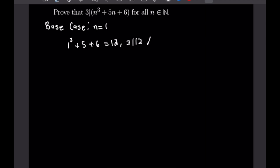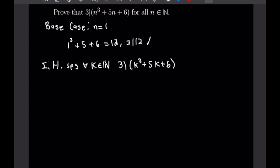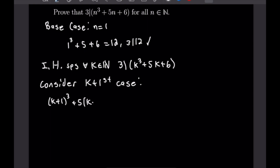Our induction hypothesis will be: suppose for all k which is a natural number, 3 divides k cubed plus 5k plus 6. Now we want to consider the k plus 1 case. Plugging k plus 1 into the polynomial gives us k plus 1 cubed plus 5 times k plus 1 plus 6.